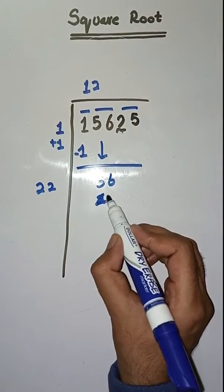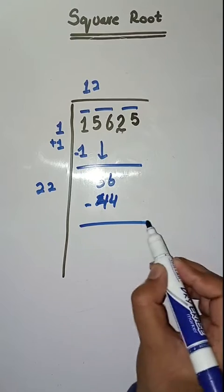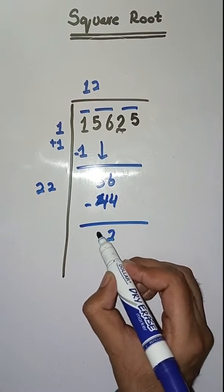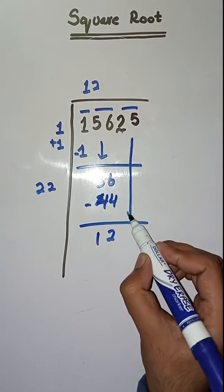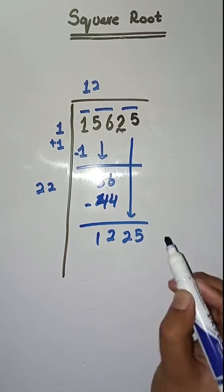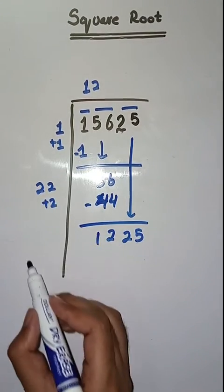Minus, we get 6 minus 4 is 2, 5 minus 4 is 1. Next pair is 25. We bring it down. Here we do 22 plus 2 which is equal to 24.